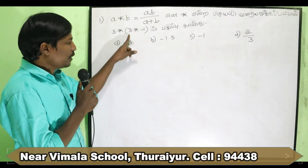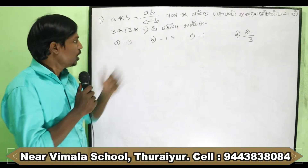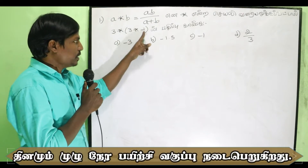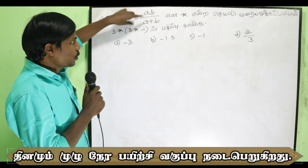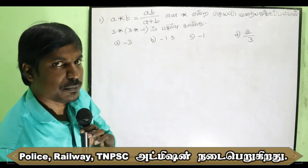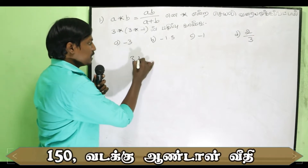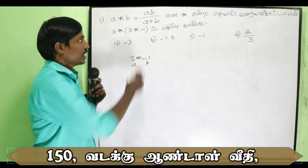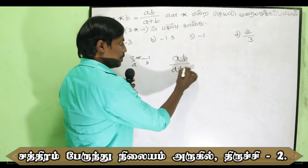First, we solve the inner bracket: 3 ★ -1. Here a ★ b gives us ab divided by a plus b. So for 3 ★ -1, this is a equals 3 and b equals minus 1. We apply: ab divided by a plus b.